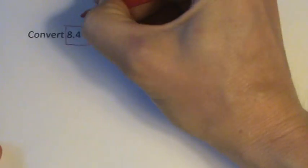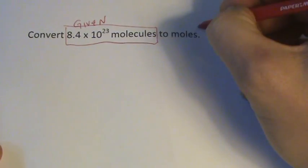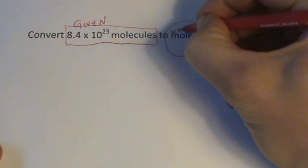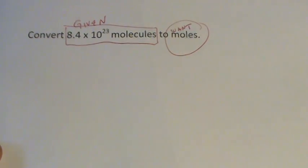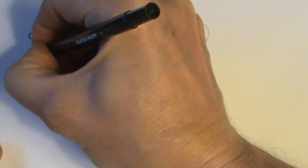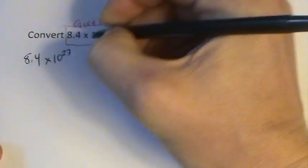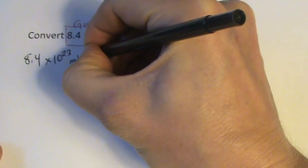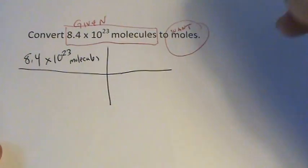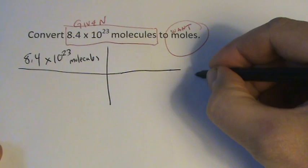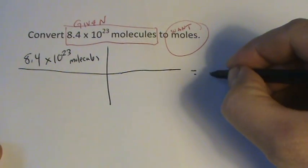Let's write down what we're given. I've got this many molecules, that's the given, and I want to find out how many moles I have. Let's set it up. 8.4 times 10 to the 23rd molecules, and that's going to equal some number of molecules, right?